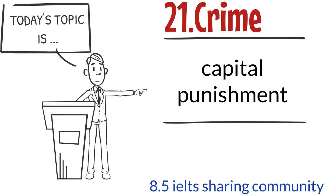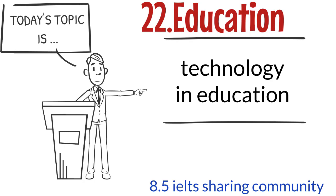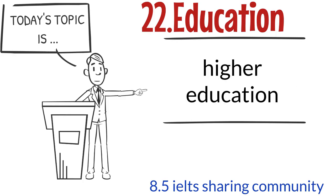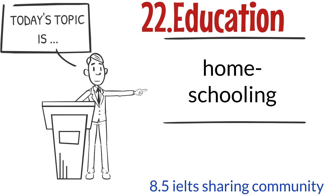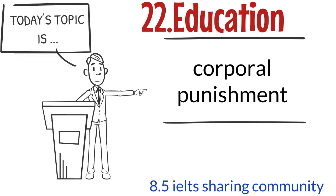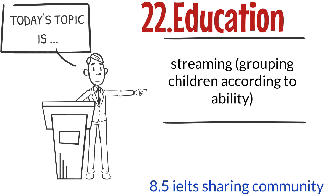Topic 22: Capital Punishment. Studying Abroad. Topic 23: Technology in Education, Education in Developing Countries, Higher Education, Homeschooling, Bad Behavior, Corporal Punishment, Single-Sex Education, and Streaming — grouping children according to ability.